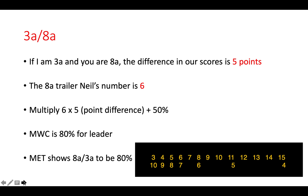At three away, eight away: 80% match winning chances for the leader and 20% for the trailer. By consulting the match equity table at eight away, three away, it is 80%. So Neil's numbers is a pretty accurate way of remembering the match equity table. Let's have another go.